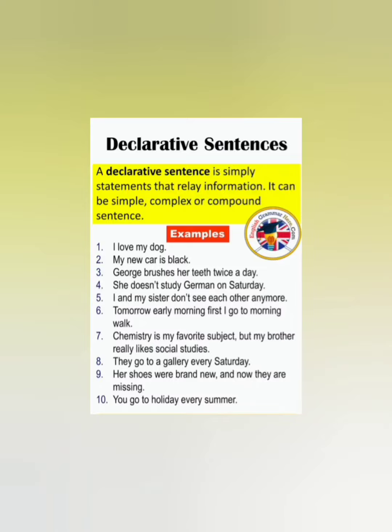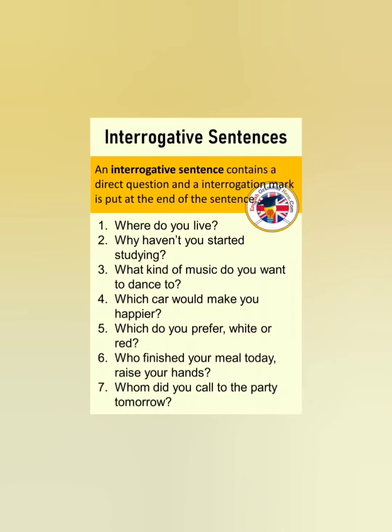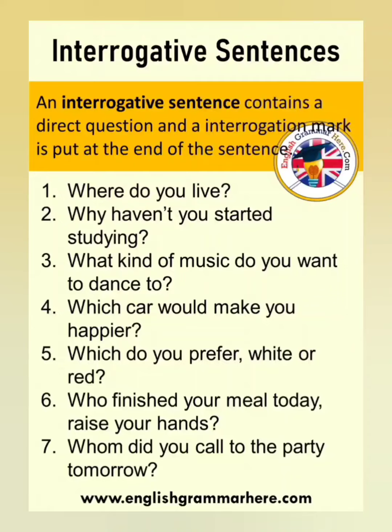Now we can identify another type of sentence: the interrogative sentence. Interrogative sentences are direct questions or interrogations. Question words like what, how, which, where, and when are called interrogative words, and the interrogative sentence ends with a question mark. Examples: 'Where do you live?' 'Why have you started studying?' 'What kind of music do you want to dance to?' 'Which car would make you happier?' 'Which do you prefer?' 'Whom do you call?' We can normally identify an interrogative sentence with a question mark and a question word.